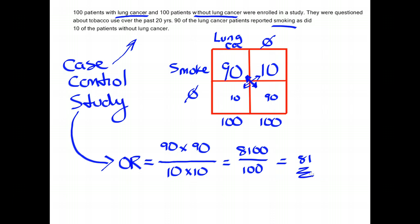What this means is that if you had lung cancer, you were 81 times more likely to smoke than if you didn't have lung cancer. Hopefully this helps you understand how odds ratios are calculated from epidemiologic studies and will help you make sense of these numbers when you read papers. Thank you very much.